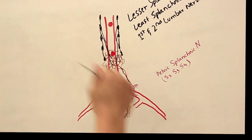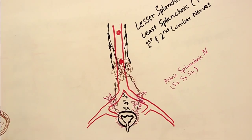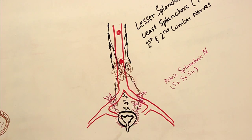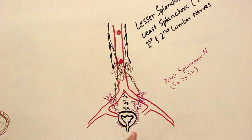They contract the detrusor muscle and relax the internal urethral sphincter. In males and females there is also an external urethral sphincter, whose fibers are not smooth muscle but skeletal muscle fibers. These are innervated by the pudendal nerve and are under our voluntary control. Thanks to that, the external urethral sphincter as well as the external anal sphincter are under voluntary control, while the internal urethral sphincter is smooth muscle and not under our control.